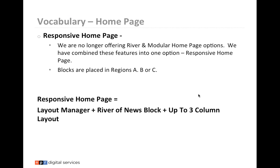Let's look at some vocabulary. The responsive homepage: we are no longer offering river and modular homepage options — we have combined these features into one option, the responsive homepage. Blocks are placed in regions A, B, or C. A lot of stations have said they're a modular station or a river station — there is no longer modular or river. You are a responsive theme once you go live. The responsive homepage uses the Layout Manager plus a river of news blocks, plus up to three-column layout. Every station will now use the Layout Manager. If you want just river of news, you put that block in the column and you're river of news.